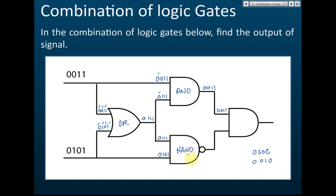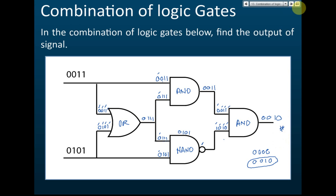Next is a NAND gate. For inputs one, one gives one; one, zero gives zero; one, one gives one — AND gate output is one, zero, one. After the NOT gate this becomes one, zero, one, zero. The final AND gate: zero AND one gives zero, zero AND zero gives zero, one AND one gives one, one AND zero gives zero. Final output: zero, zero, one, zero — that's the output for the third set of gates.